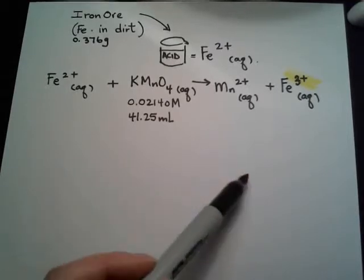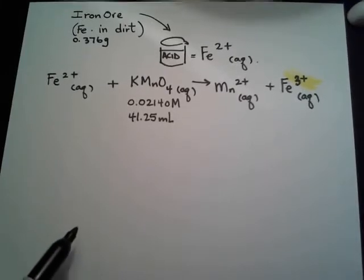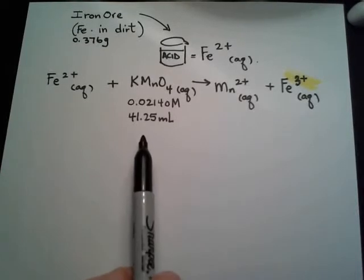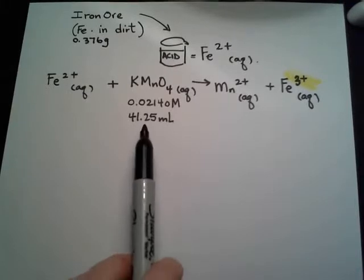So do those half-reactions out, balance your electron transfer in the end, and then put them back together as a single equation. When you put them back together as a single equation, then it becomes a stoichiometric question like we've done in conversion pathways. And think of a new question that would be worded now with your balanced equation.